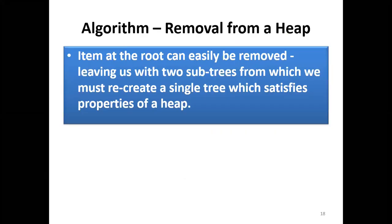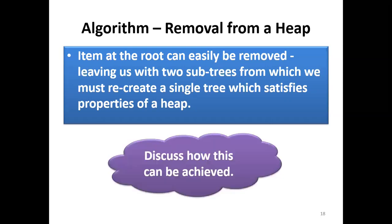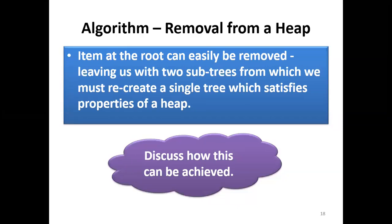Now let's look at how to remove an item from a heap. We find the item with the highest priority, which is always the item at the root node. We delete that item, which creates complications: the tree becomes separated into sub-trees and we must restructure to restore the max heap property.